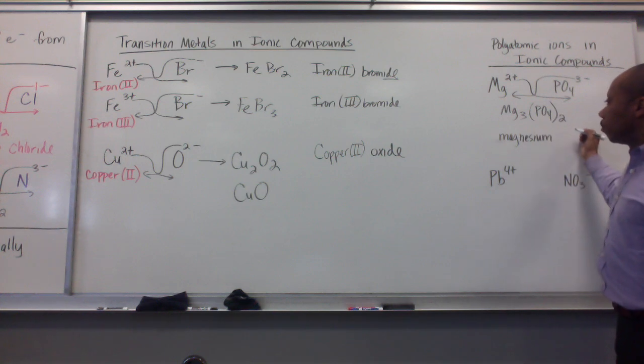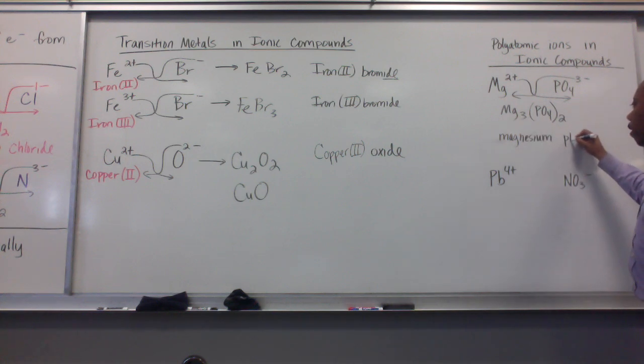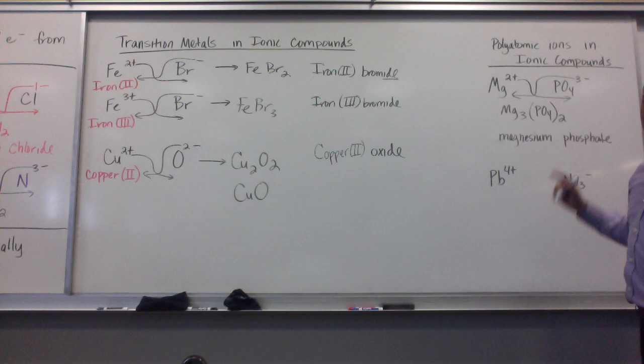This would be magnesium. Name the cation. Your polyatomic anion just has its own name already that you get from the chart that we handed out in class. So magnesium phosphate.